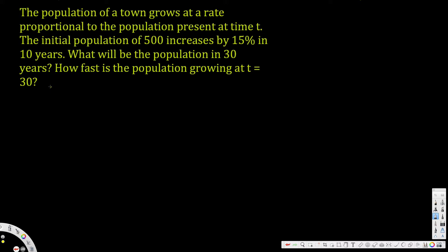Before we do this problem, you have to familiarize yourself with this equation: dP/dt = k times P. Here, dP/dt is the population growth rate, k is the relative growth rate, and P is the size of the population at a certain time.